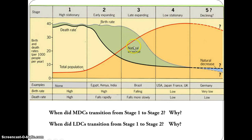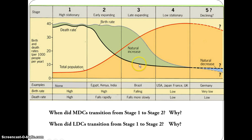In Stage 3, the death rate drops just a little bit further before leveling off. The death rate falling in Stage 2 was due to sanitation and advanced farming. The death rate dropping slightly further in Stage 3 is due to modern medicine — vaccinations, modern surgeries, and an improved overall understanding of health. However, the death rate can't continue to drop indefinitely because everyone dies at some point. So the death rate levels off, and in Stage 3 we have a moderate growth rate — CBR of about 30 and CDR of about 10 to 15 — with some growth still present.